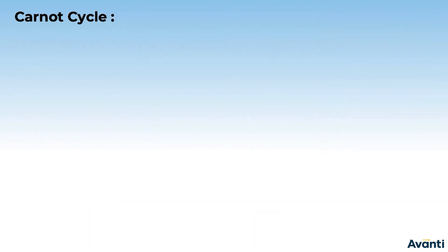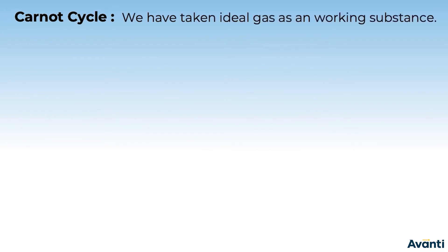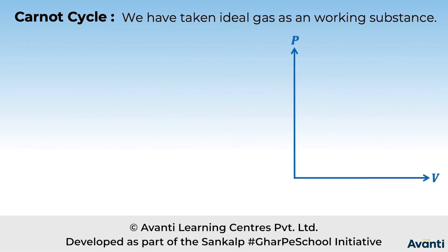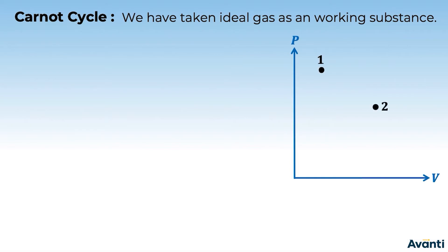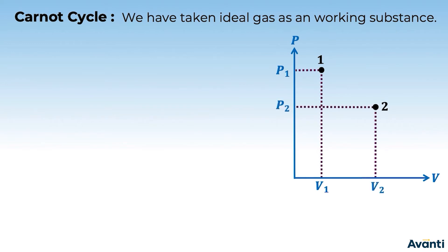Let's look at the Carnot cycle. We consider an ideal gas as the working substance and draw the PV diagram for it. State 1 is at pressure P1 and volume V1, and state 2 is at pressure P2 and volume V2.